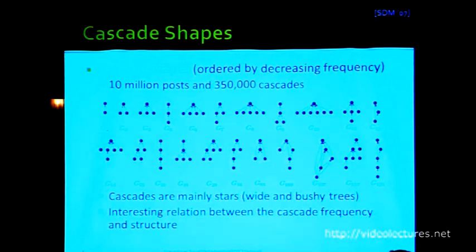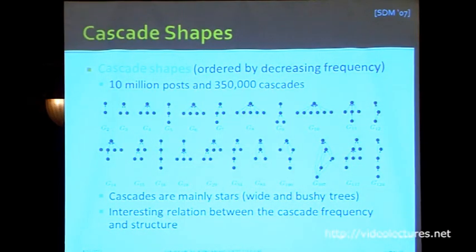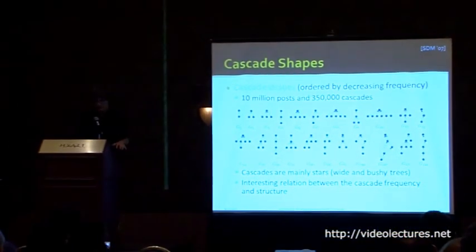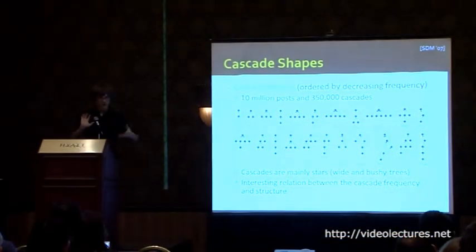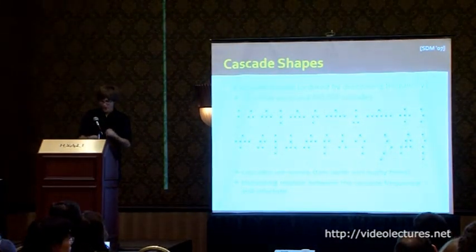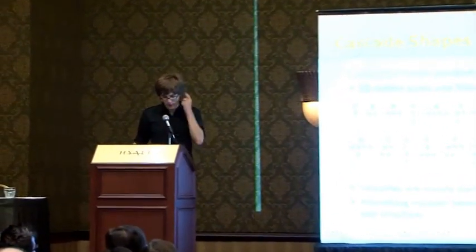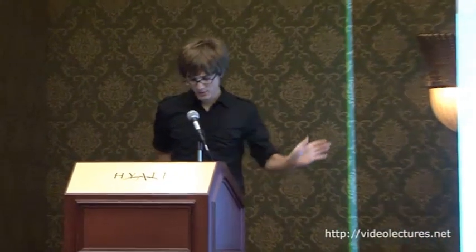You can enumerate and count the shapes of cascades. In a piece of analysis using 10 million blog posts, we identified 350,000 different cascades and counted how often each pattern occurs. The observation is that small cascades are more frequent than big ones. Most cascades are very bushy — basically stars or shallow wide trees. But from time to time you have more interesting structures of how information propagated.